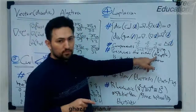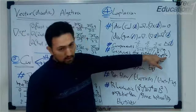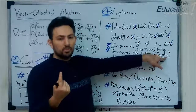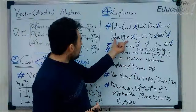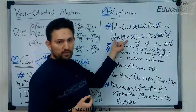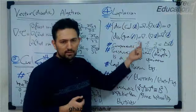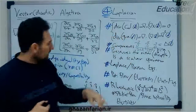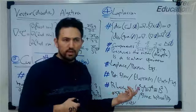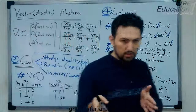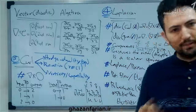The divergence operator reduces the order by one, and the gradient increases the order by one. So when we simultaneously apply both of them, the order of the result does not change. Another point is about the Laplacian equation: when the Laplacian of something is zero, this partial differential equation is called the Laplace equation.